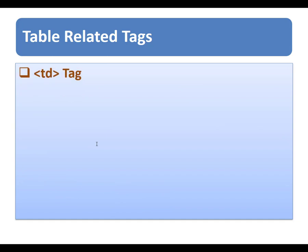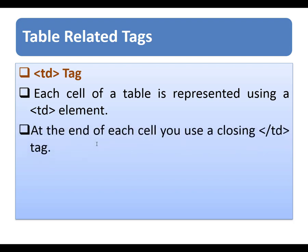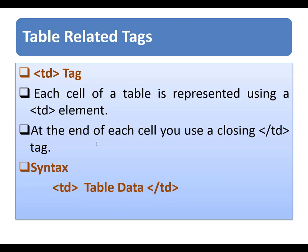The next tag is the td tag. Each cell of a table is represented using a td element. The td stands for table data. At the end of each cell you use the closing td tag. The syntax uses an opening and closing td tag, and the cell data goes in between.